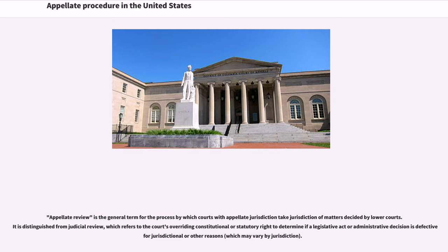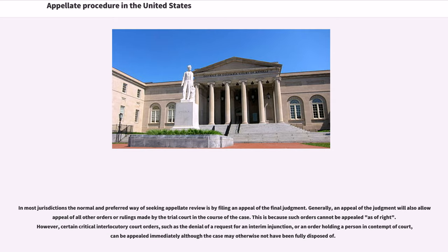Appellate review is the general term for the process by which courts with appellate jurisdiction take jurisdiction of matters decided by lower courts. It is distinguished from judicial review, which refers to the court's overriding constitutional or statutory right to determine if a legislative act or administrative decision is defective for jurisdictional or other reasons, which may vary by jurisdiction. In most jurisdictions the normal and preferred way of seeking appellate review is by filing an appeal of the final judgment. Generally, an appeal of the judgment will also allow appeal of all other orders or rulings made by the trial court in the course of the case, because such orders cannot be appealed as of right.